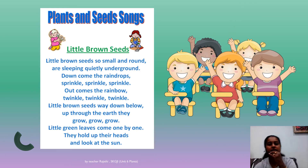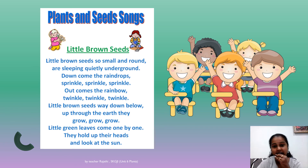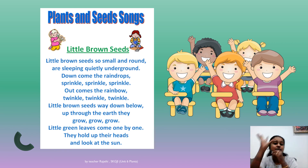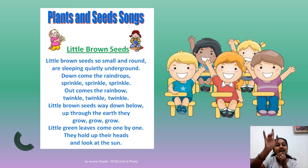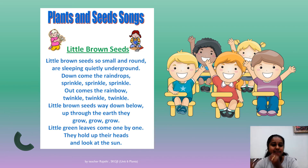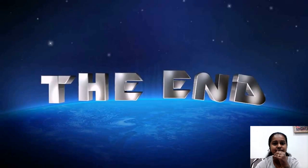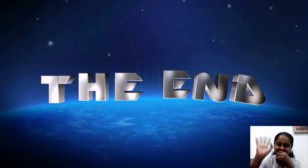Let's sing a song! 'Little brown seeds, so small and round, are sleeping quietly underground. Down comes the rain, sprinkle sprinkle sprinkle. Up comes the rainbow, twinkle twinkle twinkle. Little brown seeds way down below, up through the earth they grow grow grow. Little green leaves come one by one, they hold up their heads and look at the sun.' That's all for today's lesson — thank you students, bye-bye, see you all!